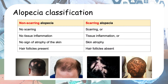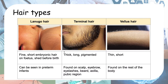In this presentation we'll be focusing on non-scarring alopecia. In non-scarring alopecia there is obviously no scarring, no tissue inflammation, no sign of atrophy on the skin, and if you look very closely at the scalp you can see that the hair follicles are still present.